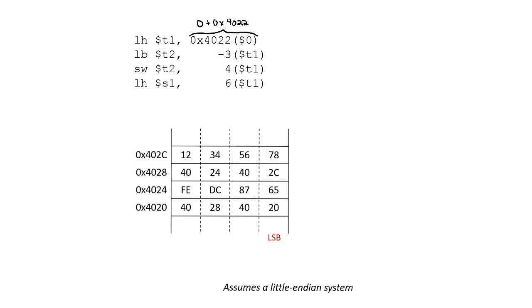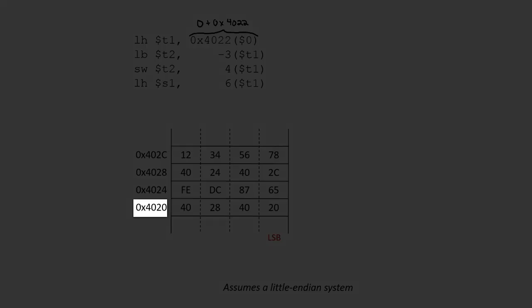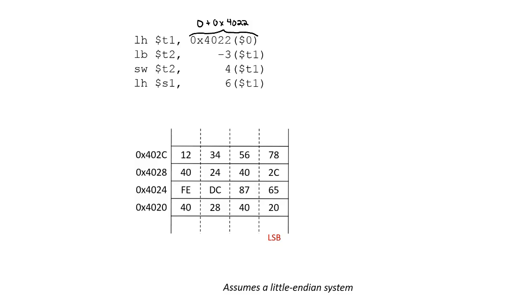Looking at our figure, we can see that the lowest address shown is 0x4020, and with the least significant byte on the right, that would mean that the far right entry is 4020, and then we work up: 4021, 4022, 4023, etc. In this case we're interested in 4022, which corresponds to the two bytes on the bottom left — these two bytes here.